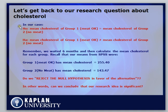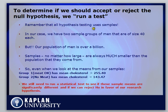Let's get back to our research question. We have our null and alternative hypotheses, and our goal is to compare the means of these two groups to prove they're significantly different. We know from SPSS the means are 255.4 and 143.47, but the question is: do we reject the null hypothesis? To answer this, we have to run a test. Because we're comparing two sample means from two small groups, we're going to run a t-test.